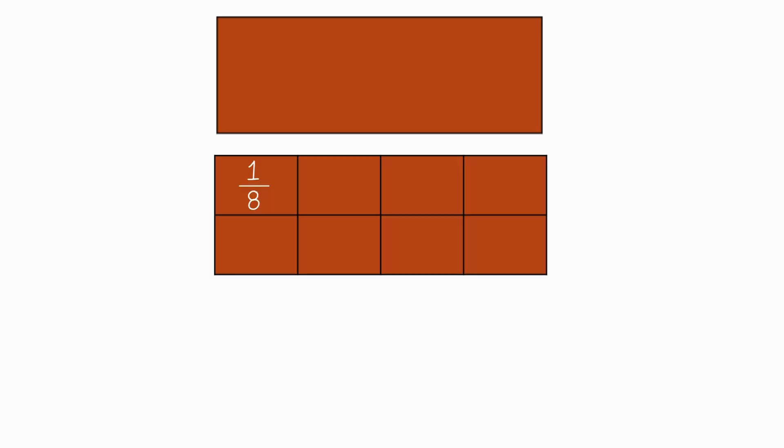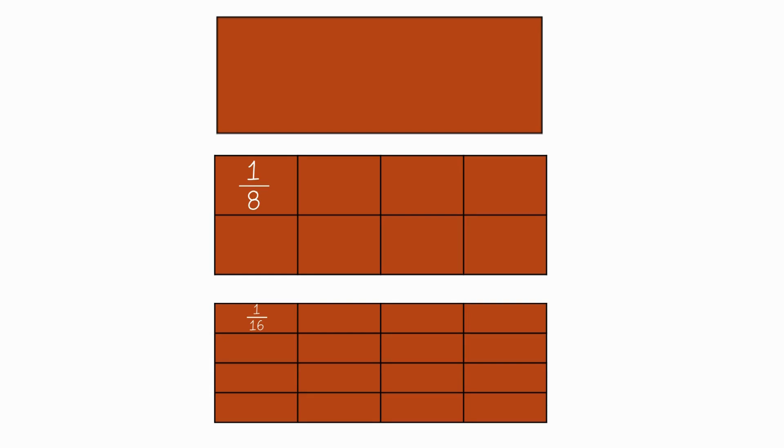Imagine you have this chocolate bar, and you love chocolate so much you can't get enough of it. Would you rather get one out of eight pieces, or one out of 16 pieces? Even though 16 is a bigger number, the piece is smaller. That's because the denominator tells us how many pieces we're cutting the whole into. The bigger the denominator, the smaller the piece.